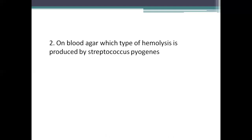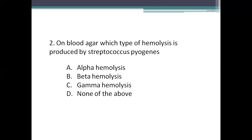Next question: on blood agar media, which type of hemolysis is produced by Streptococcus pyogenes? Option A: alpha hemolysis. Option B: beta hemolysis. Option C: gamma hemolysis. Option D: none of the above. The right answer is Option B, beta type of hemolysis.